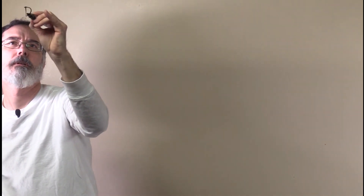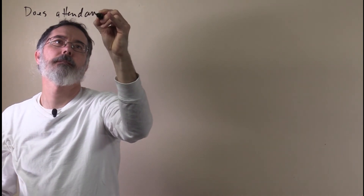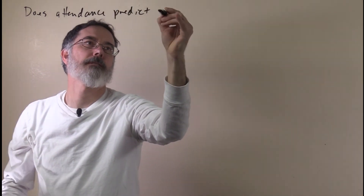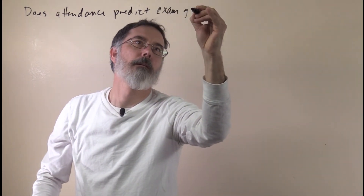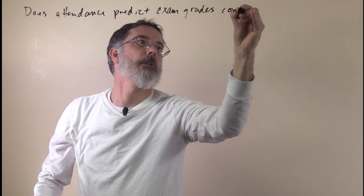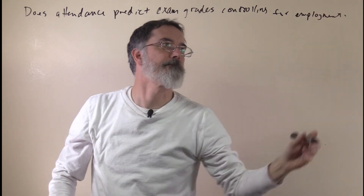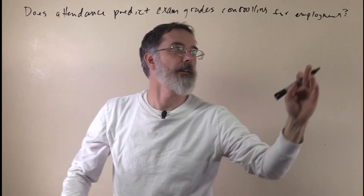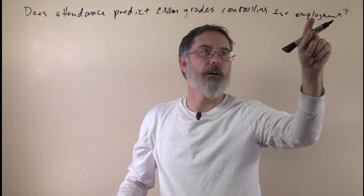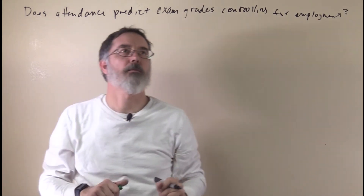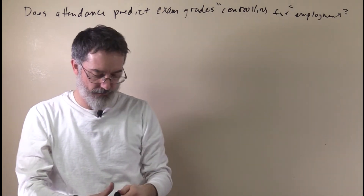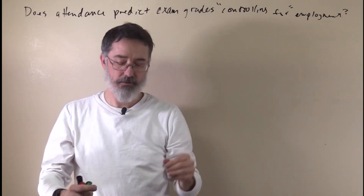Now I want to explain what it means to control for a variable. For example, we want to find out: does attendance predict exam grades controlling for employment? That is, for students just having a full-time job, explain the relationship between attendance and exam grades. Controlling for is one expression, one set of words that you will see for this.